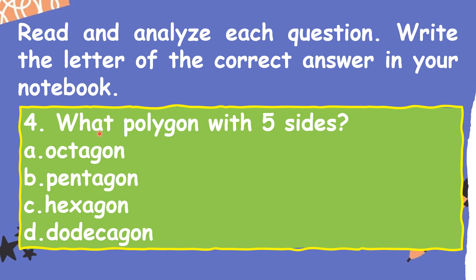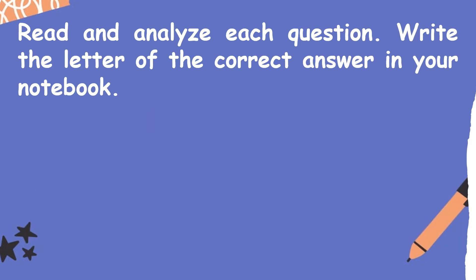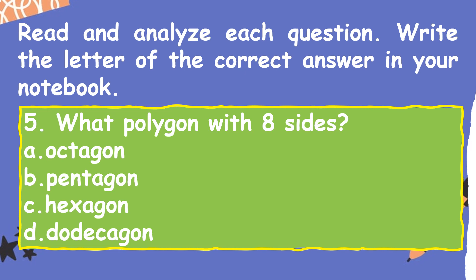Number four: what polygon has five sides? A. Octagon, B. Pentagon, C. Hexagon, D. Dodecagon. Number five: what polygon has eight sides? A. Octagon, B. Pentagon, C. Hexagon, D. Dodecagon. The answer is octagon. Very good.